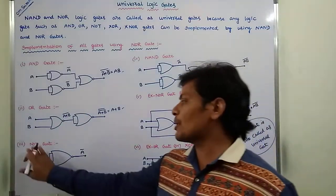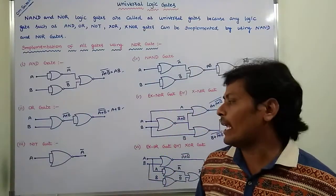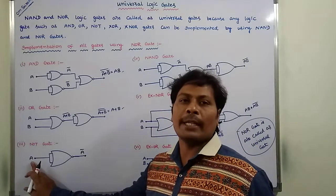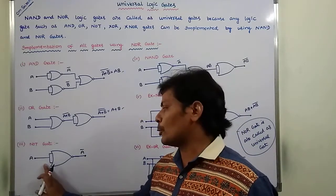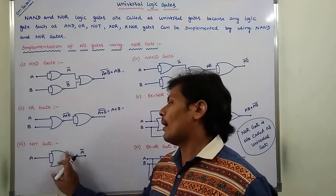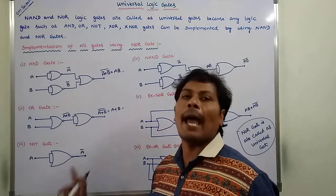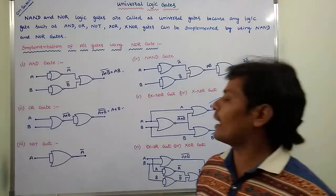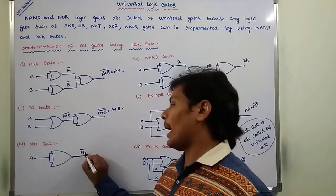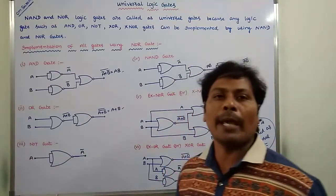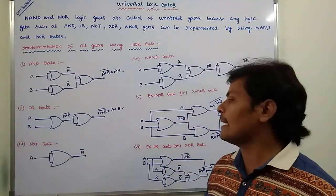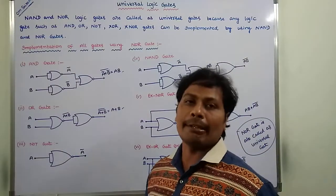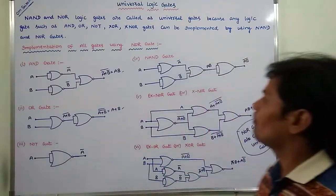Next one is NOT gate. Only one input A is applied to the NOR gate as both inputs, then we are getting A bar into A bar, that is A bar. This is the output of the NOT gate.